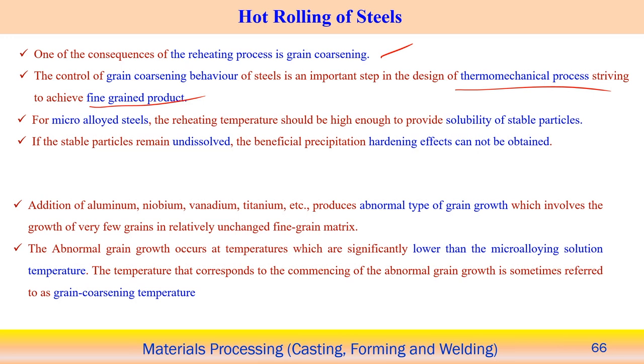In micro-alloy steel, the reheating temperature should be high enough to provide stability and solubility of the particles. If the stable particles are not dissolved, the beneficial precipitation hardening effects cannot be obtained. If particles remain undissolved, hardening by precipitation cannot be observed. Sometimes the addition of aluminium, niobium, vanadium, and titanium to steel produces abnormal grain growth, which involves the growth of very few grains in one preferred direction while other grains remain relatively unchanged.